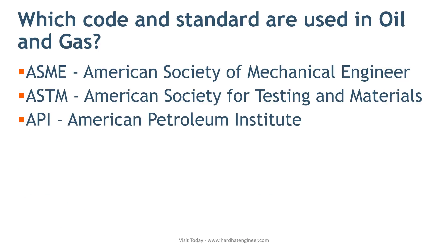Next is API Standard and Recommended Practice. API is the American Petroleum Institute, which publishes standards and recommended practices used in the petroleum industry. This is an industry-specific institute, whereas ASME and ASTM publish standards and codes used in general applications also. Recommended practices are used in the operation and maintenance of process facilities.